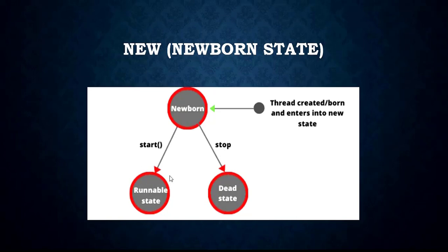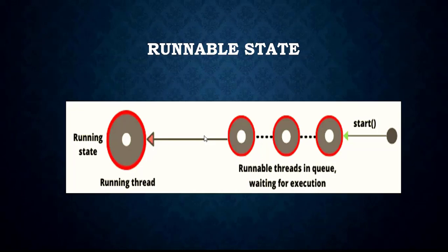In case the start method is not called, you can call the stop method on the thread instead. If you stop that particular thread, it will go straight into the Dead state. The Dead state is essentially when the thread has finished execution. The second state is the Runnable state, which means a thread is ready for execution.